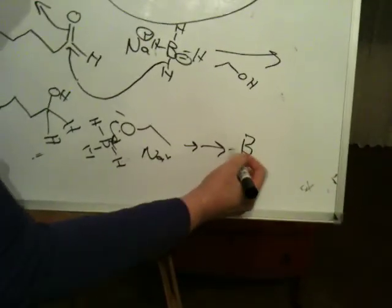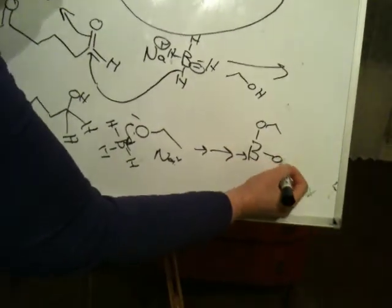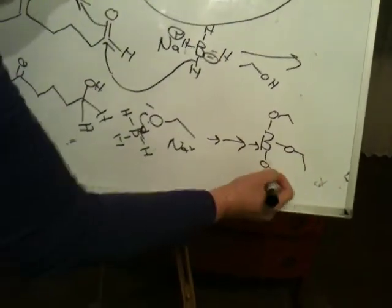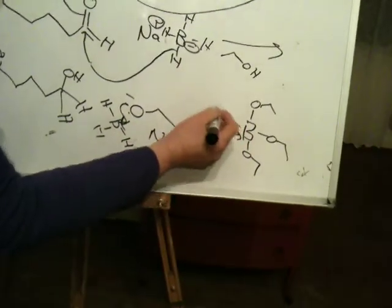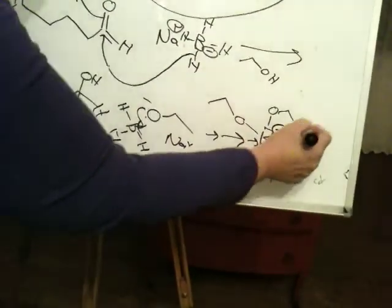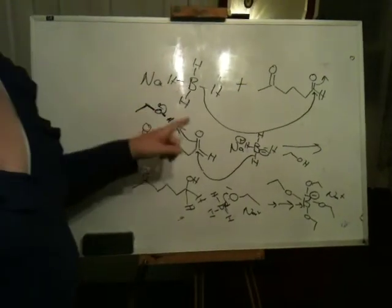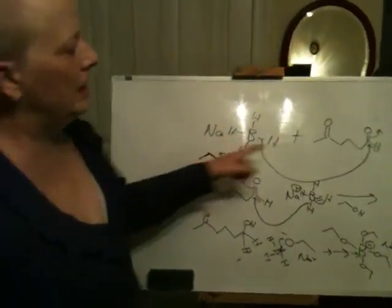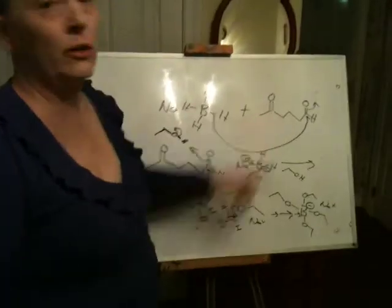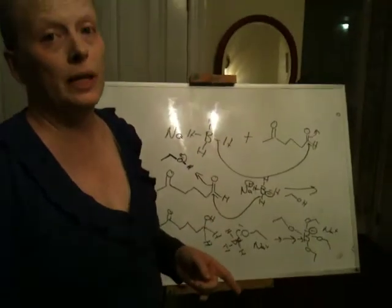So this will become, eventually, after several steps, this will become B-O-Na+. Okay, how much time? Seven minutes and twenty-seven. Okay, so again, what am I doing here? Showing you, first of all, that sodium borohydride can be used selectively to hit an aldehyde over ketone. That doesn't mean it won't react with the ketone.